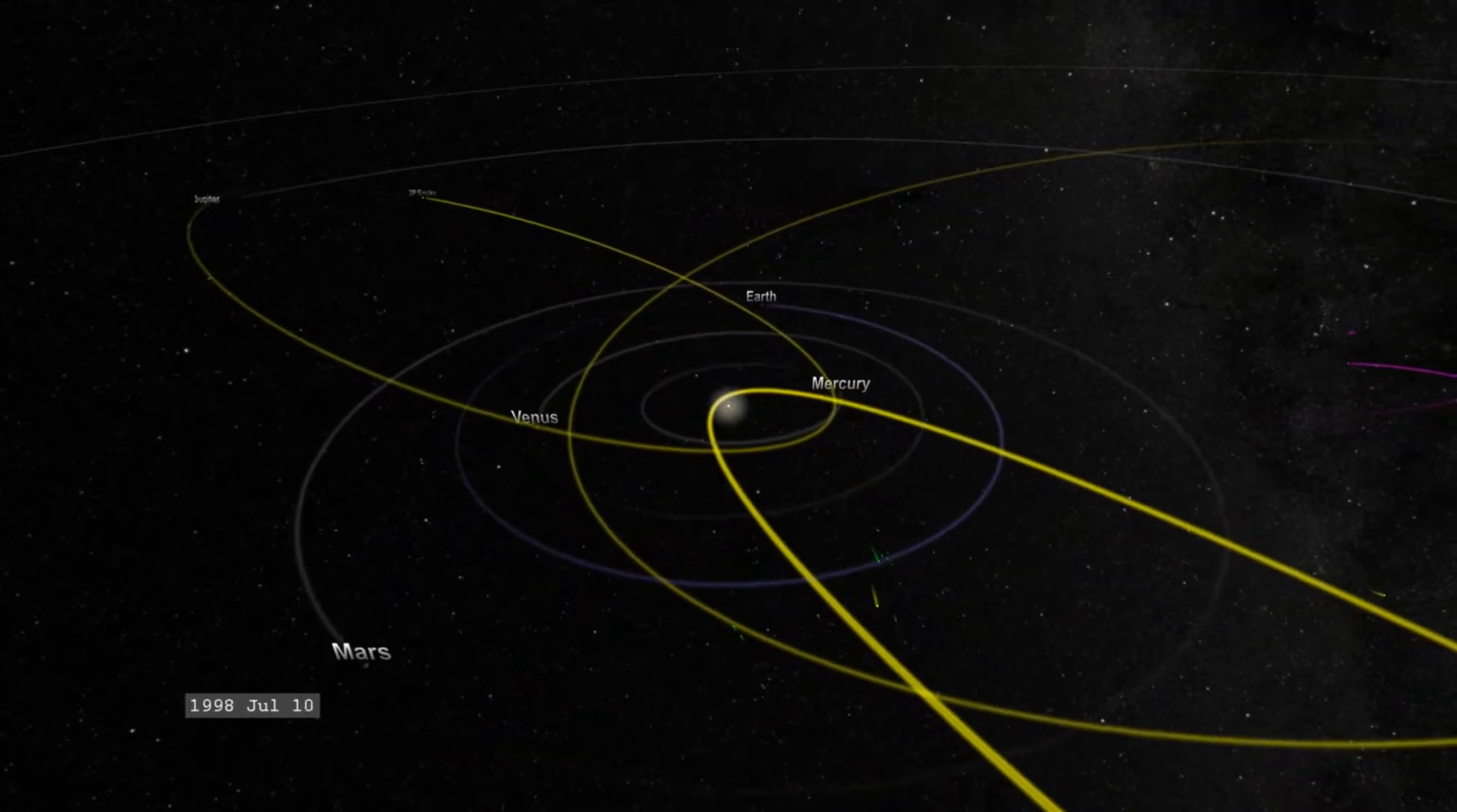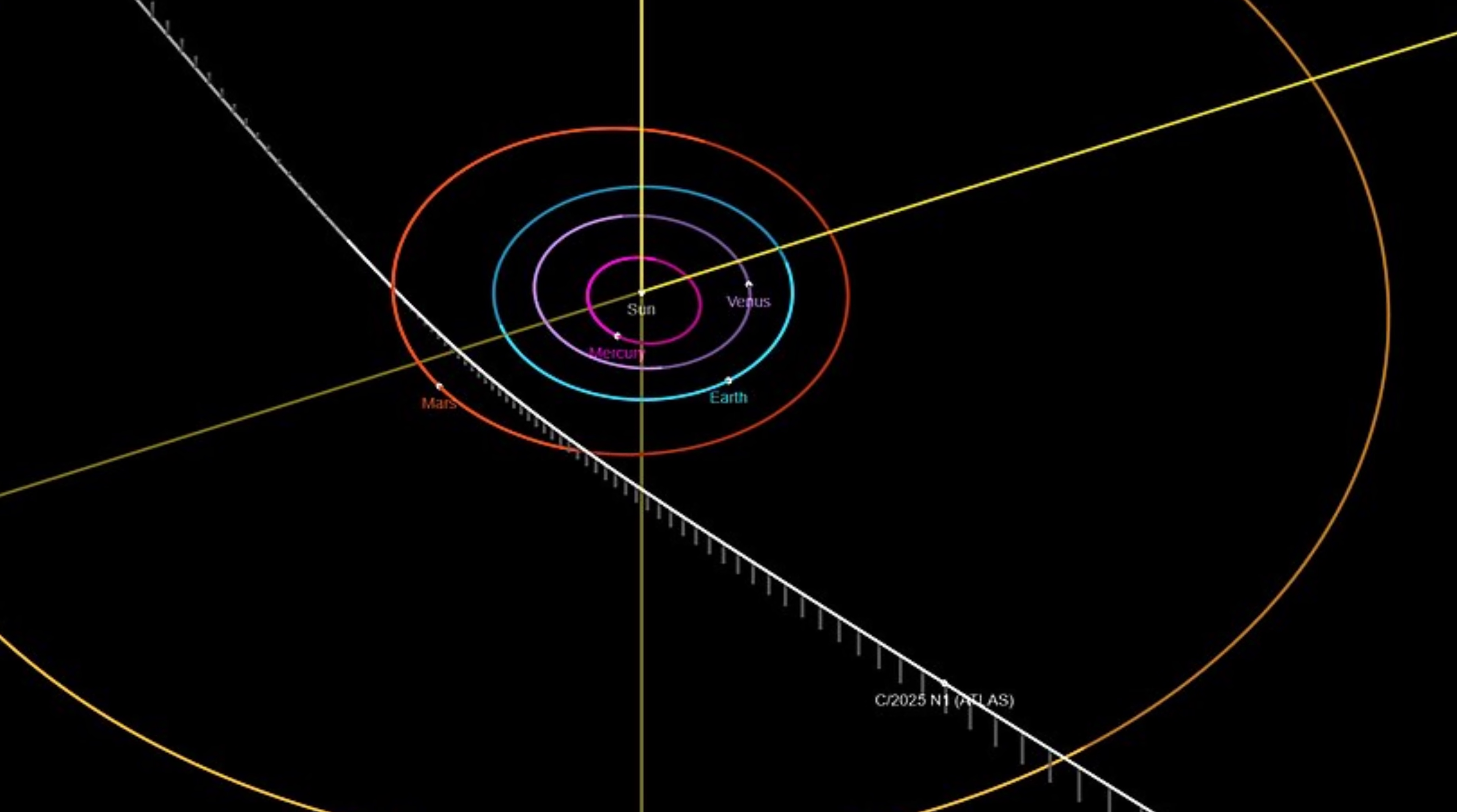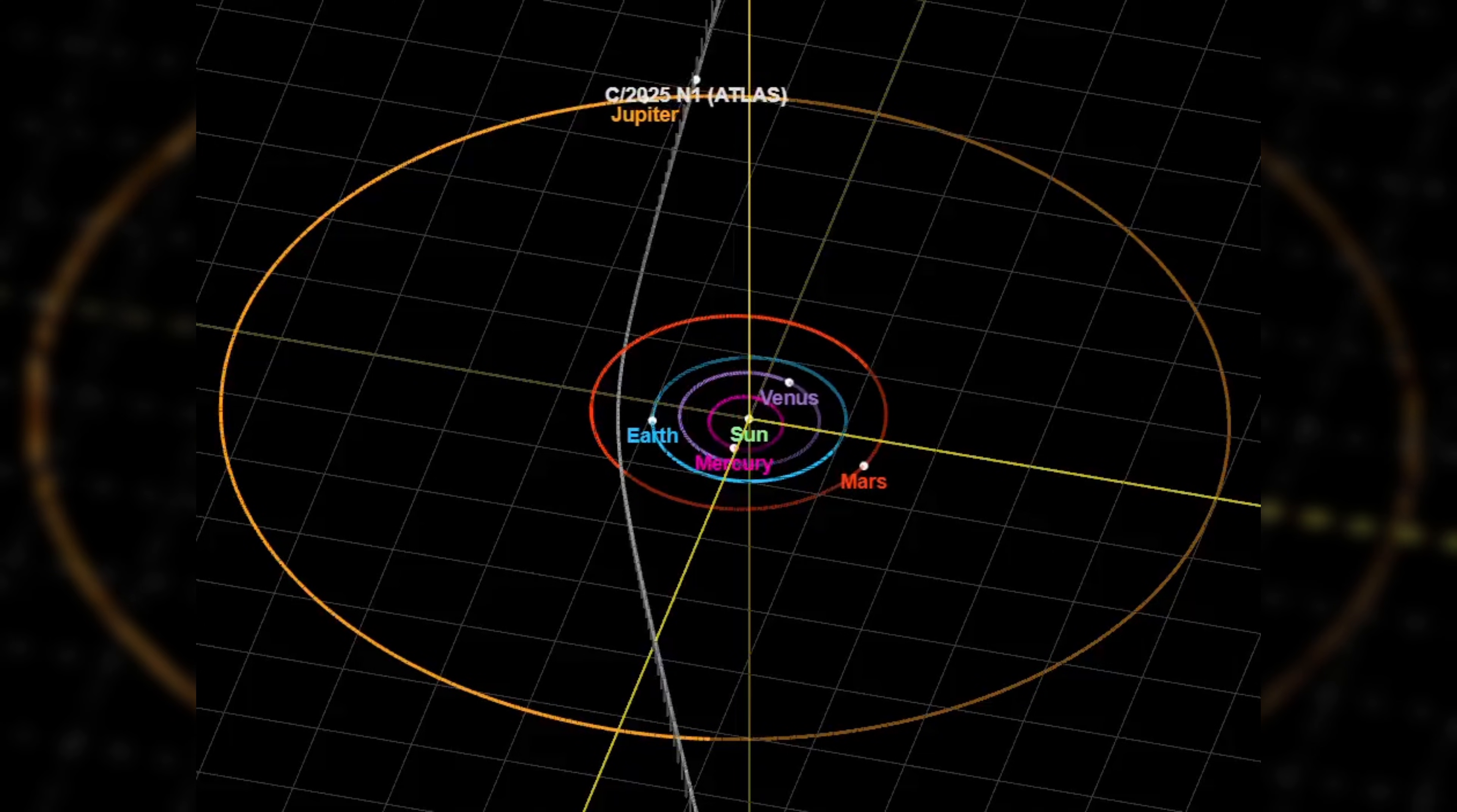This is an unusual feature for an interstellar object, as most objects entering the solar system come in at random angles. The fact that 3I Atlas was aligned so perfectly with the plane of the solar system raises questions about how such an object could be so precisely directed. Was this trajectory purely accidental, or could there have been some external influence guiding it on this path?